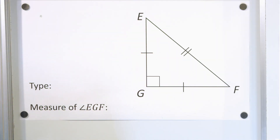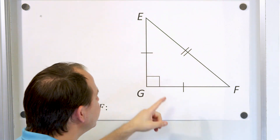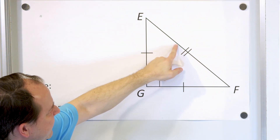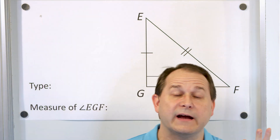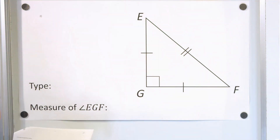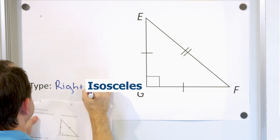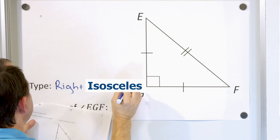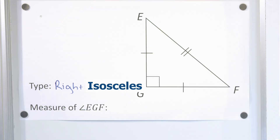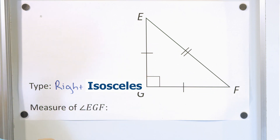Problem number two: we have this triangle and want to identify its type. We see immediately there is a right angle here, so this is a right triangle. We also know that this side is the same length as this one, but this third side is different — so two sides are equal, which means it's isosceles. We call this a right isosceles triangle. The measure of angle EGF is 90 degrees, as shown by the symbol.